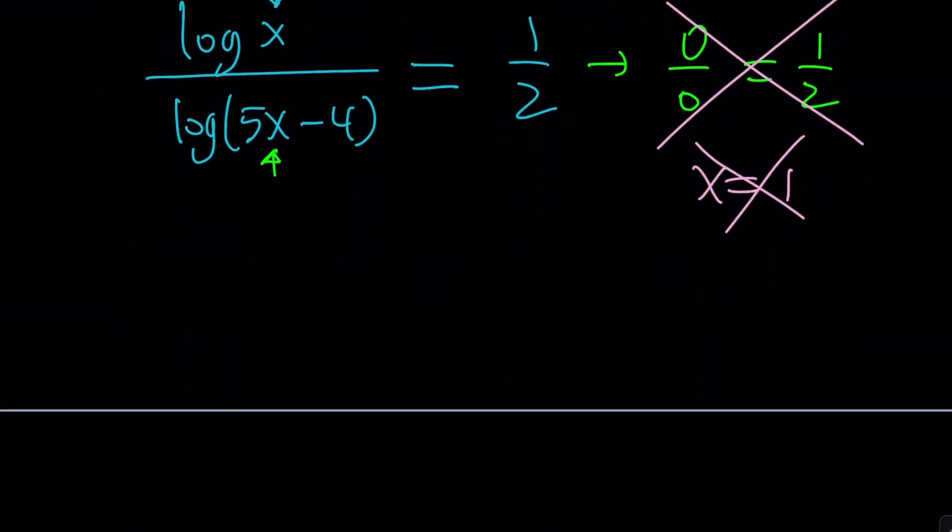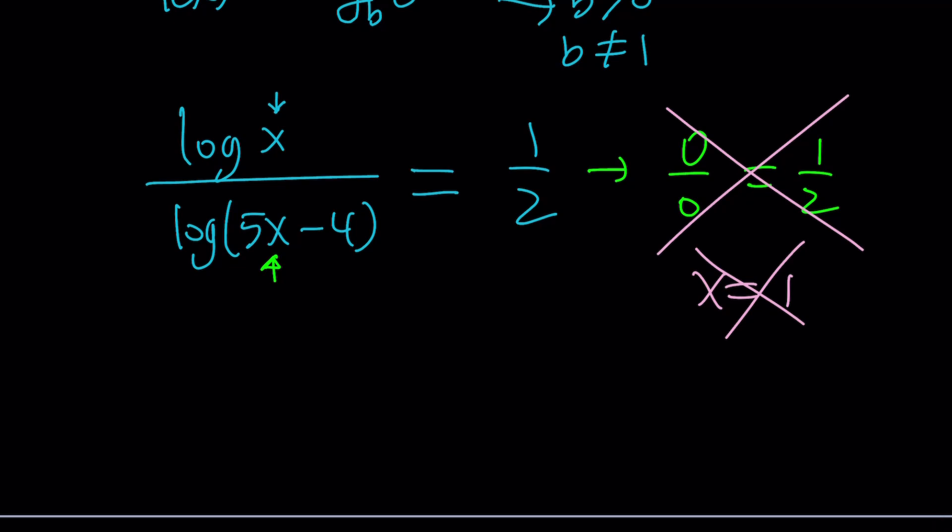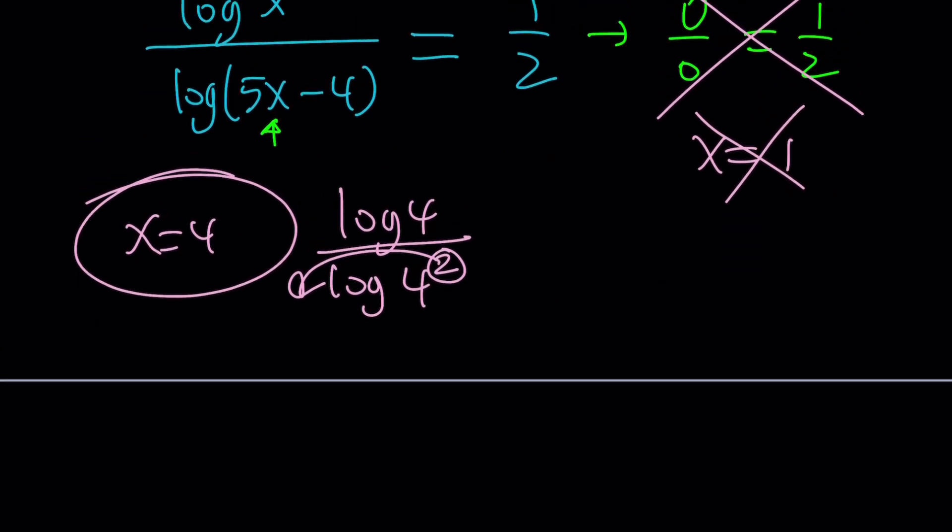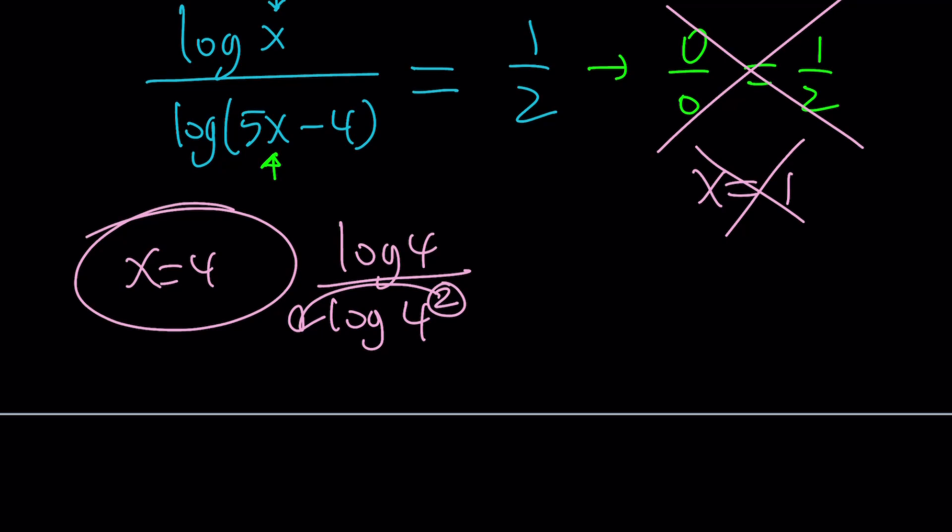So now, what about 4? Hopefully, 4 will work. So we end up with one solution at least. If x equals 4, you're going to get log 4. And at the bottom, it's going to be 4 times 5, 20 minus 4, log 16. And log 16 is 4 squared. Move it up. Move it to the front. And yes, it is going to work. I checked it real quick. Hopefully, that wasn't too quick. But yes, x equals 4 is going to work.